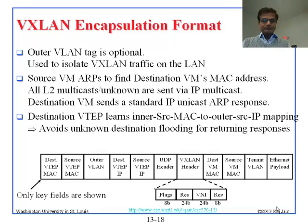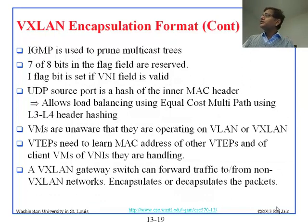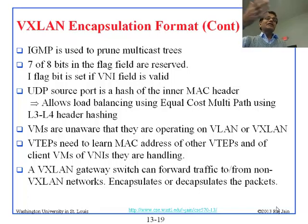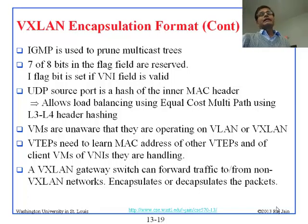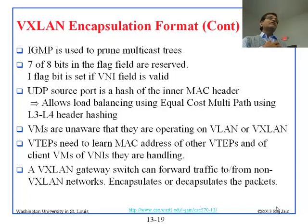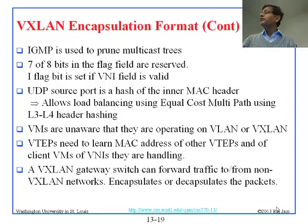IGMP is used to prune the multicast tree. IGMP is the Internet Group Multicast Protocol — that is how you register for multicast. Using an IGMP message, you can tell your router you are interested in any multicast for a specific address. If nobody registers in a sub-tree, packets will not be sent any further in that sub-tree. That is called pruning the multicast tree — if people don't register, we don't send anything in that whole sub-tree.